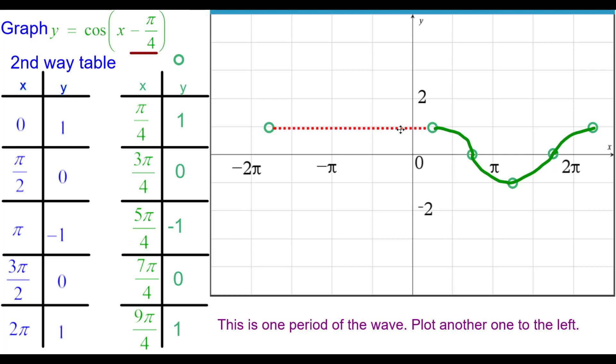So we'll start at the initial point and go back. Next point, I'm sorry, go back a period, 2 pi. Sorry about that. Back a period, 2 pi.